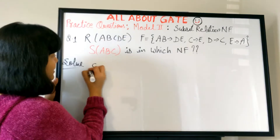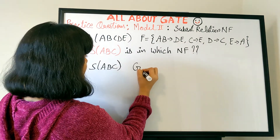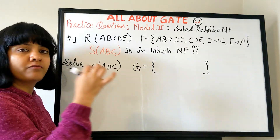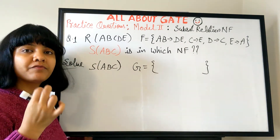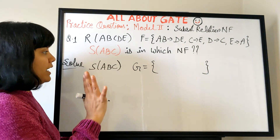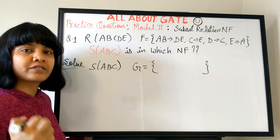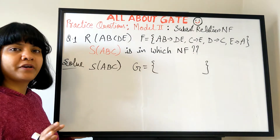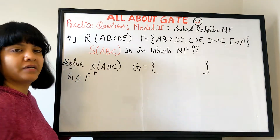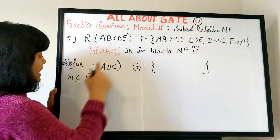We have relation S with A, B, C. Let's assume the functional dependency set for S is G, and we have to find out what functional dependencies belong in that set. To find the normal form we first need the key, and for that we need the FD set — which is not given. So we have to find it first. We do this using F+, the closure of the functional dependency set. We will figure out the value of G as a subset of F+, keeping only those FDs from F+ that are applicable to G.